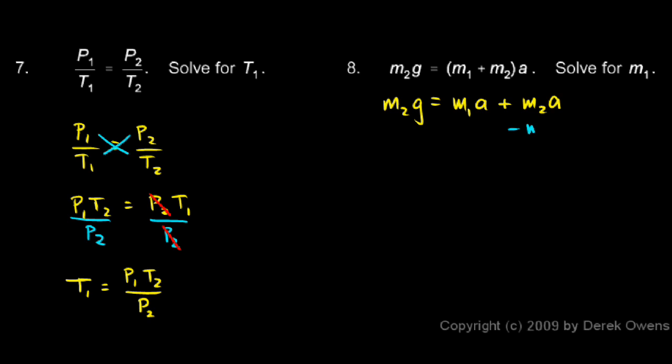And then I'll subtract M2A from each side. And those terms cancel out on the right. And that leaves me with M1A equal to this. So I'll write M1A equals M2G minus M2A.